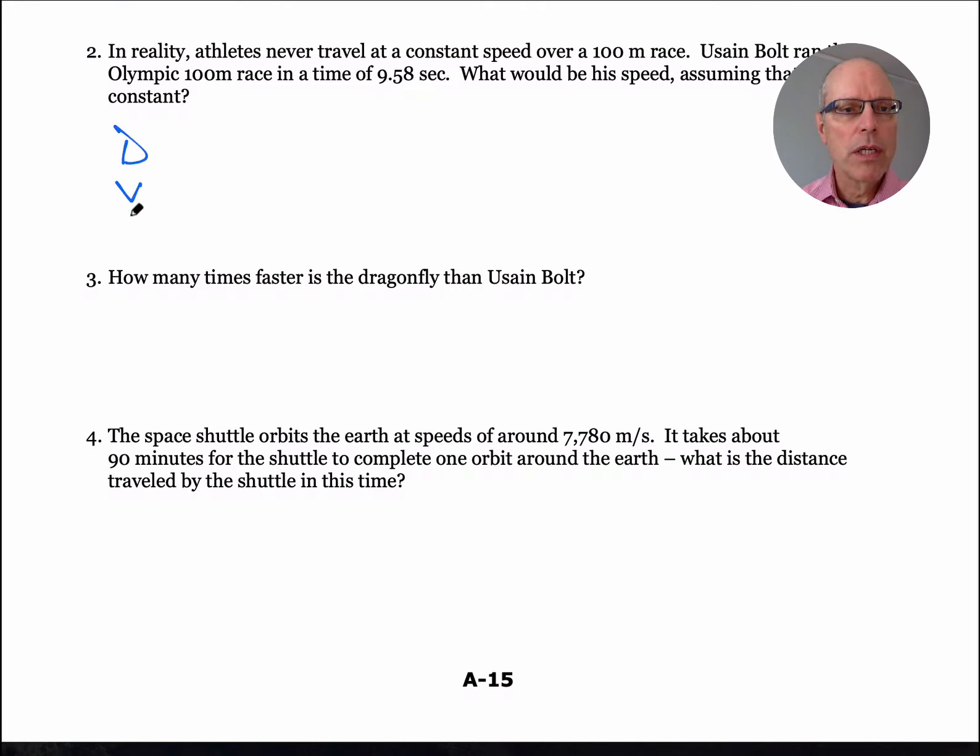This next question, same thing, D, V, T. Let's see what info they give us. Same 100 meters, this time it's Usain Bolt running it, and he can do it in 9.58 seconds. You notice that's a longer time than the dragonfly by far. Same kind of problem, D equals V times T. This time we solve for V though, so divide both sides by T.